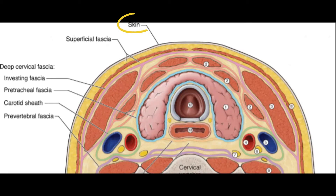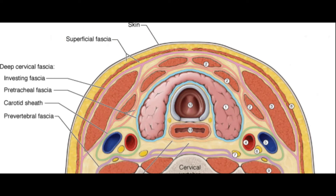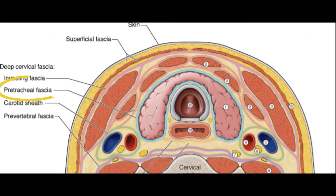The first S stands for the skin, the second S stands for the superficial fascia, and the last one stands for subcutaneous fat. The F is for the deep cervical fascia, and it's got three layers: the investing fascia, the pre-tracheal fascia, and then the pre-vertebral fascia.